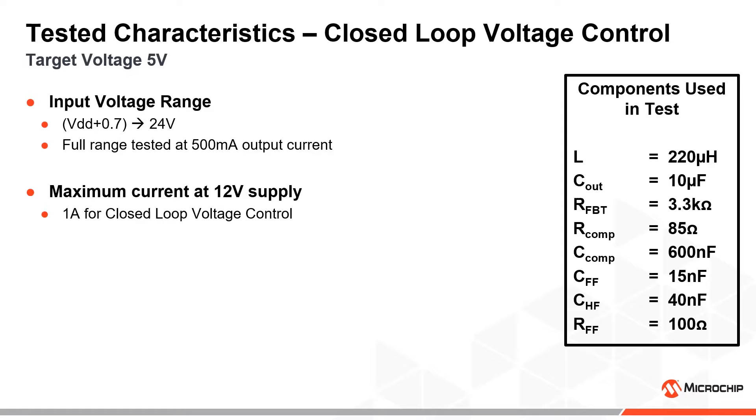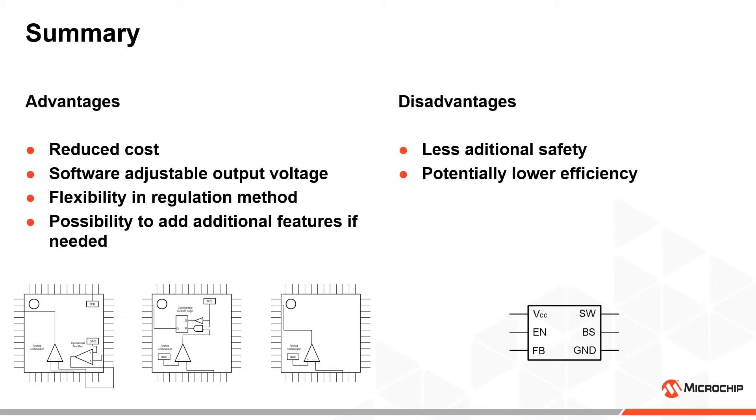As efficiency is highly dependent on proper layout, this has to be measured on a system-to-system basis. Using the core independent peripherals in this way can reduce cost by reducing the number of specialized ICs used in the circuit.